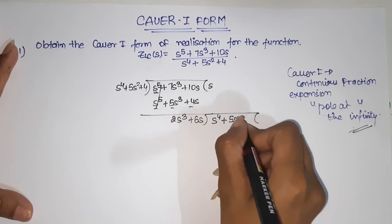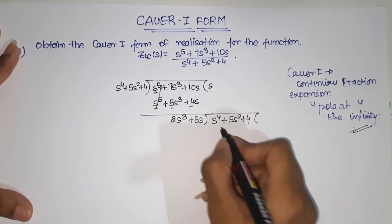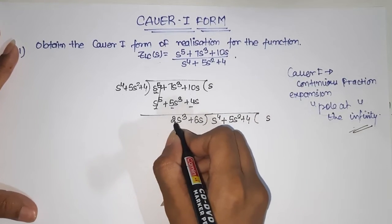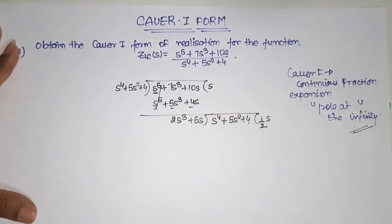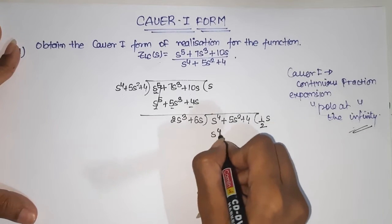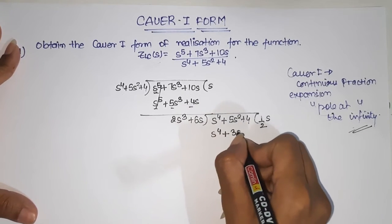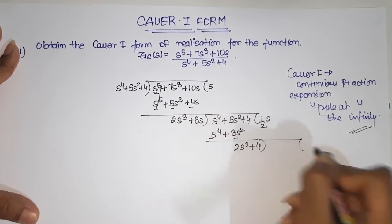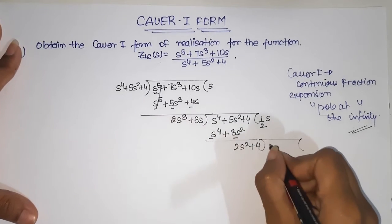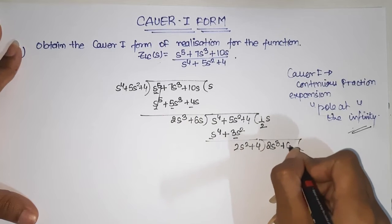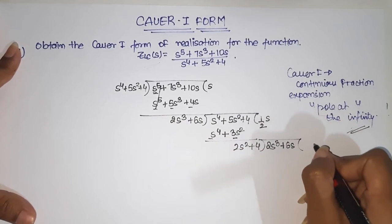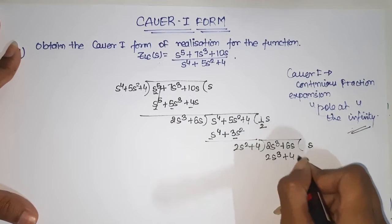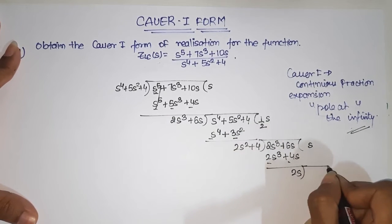Now s⁴ + 5s² + 4 is brought over. The coefficient is 1 but we have 2, so we multiply by half. This gives s⁴ + 3s², and on subtracting we get 2s² + 4. Dividing again: 2s³ + 6s divided by 2s² + 4. We get s, giving 2s³ + 4s, and on subtracting we get 2s.